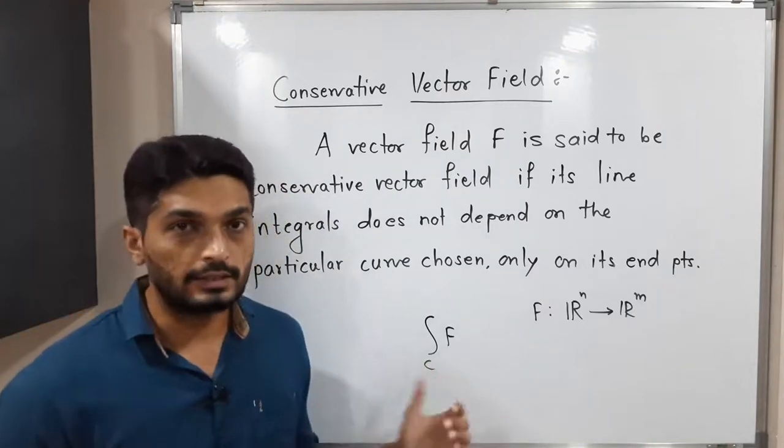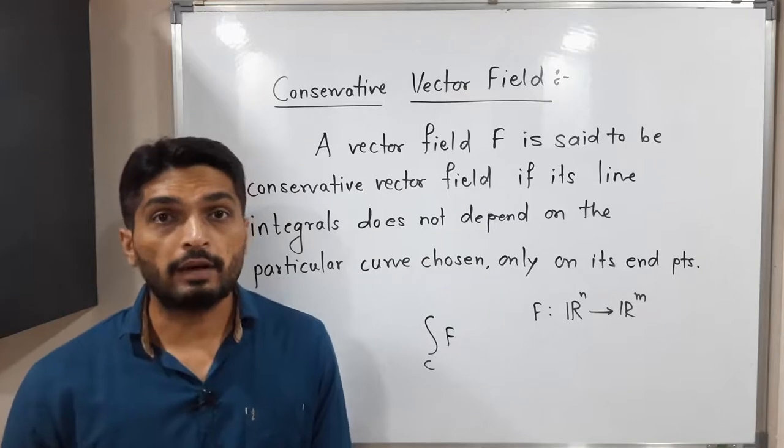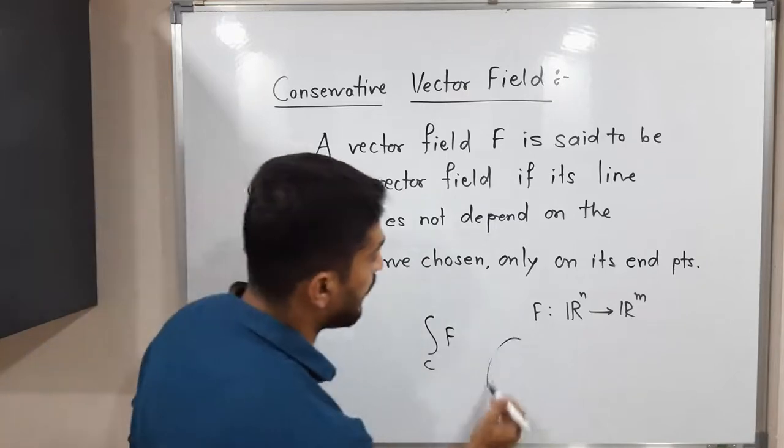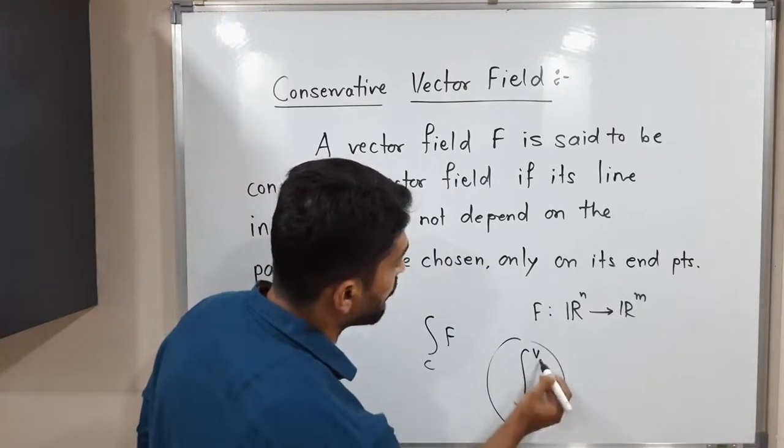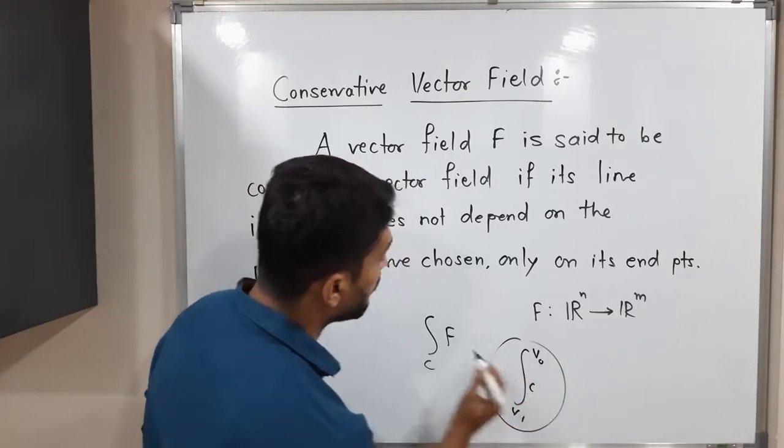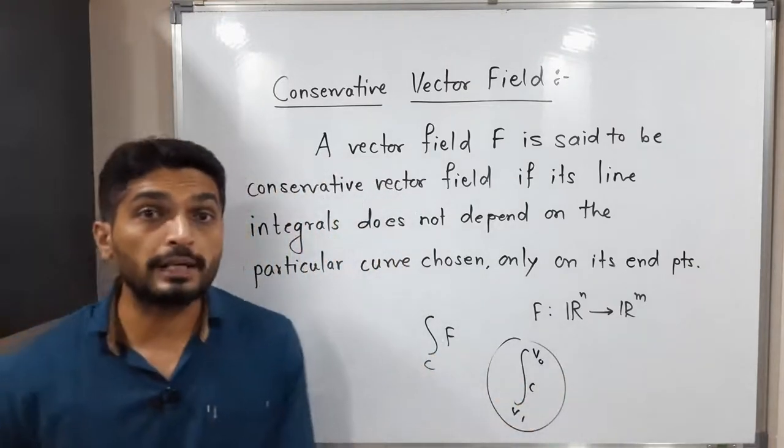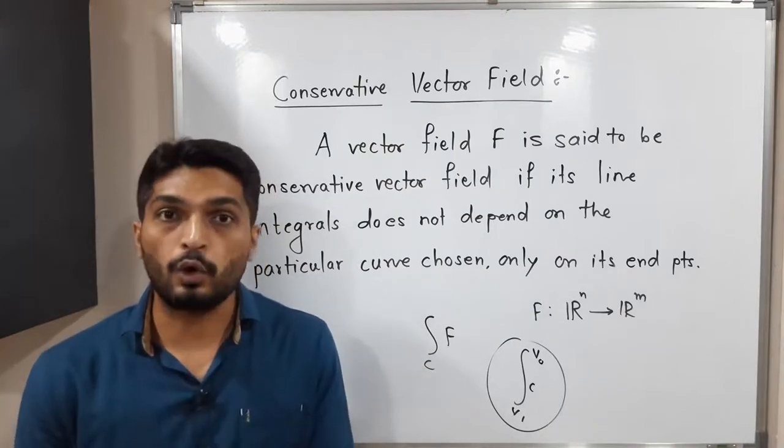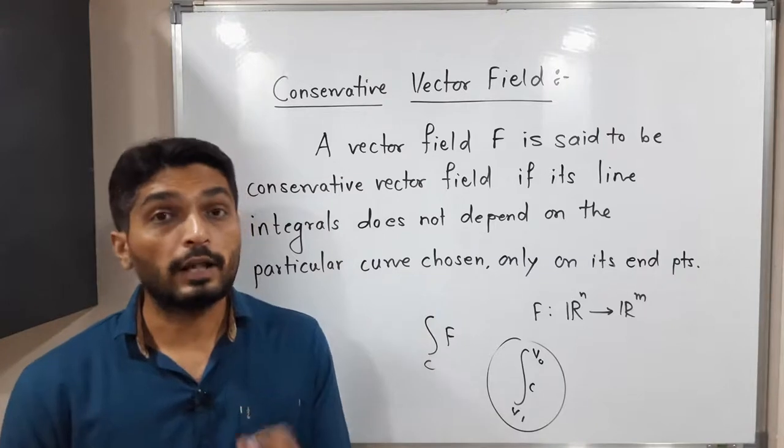You know that the value of that line integral depends on curve C. So when you have a curve C from V0 to V1, the value of this line integral of F depends on curve C. But for some vector fields, the value of line integral depends only on its endpoints.